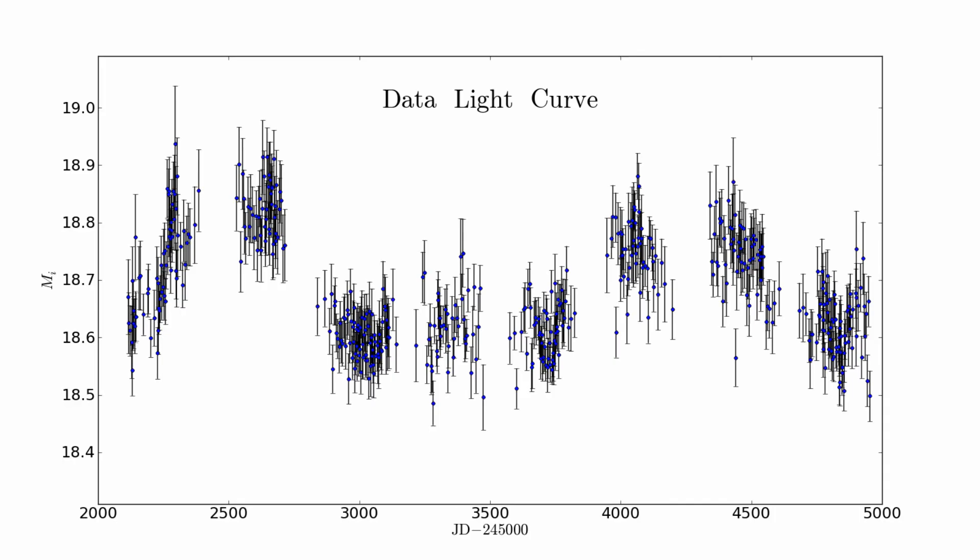We use light curves of 55 quasars behind the Small and Large Magellanic Clouds monitored by OGLE. There are typically 570 epochs taken over seven years on a two-day cadence.